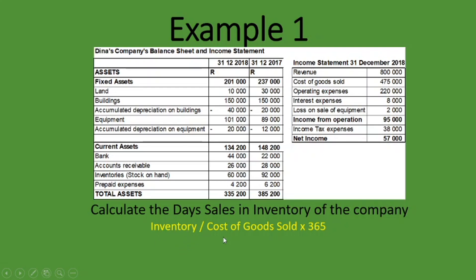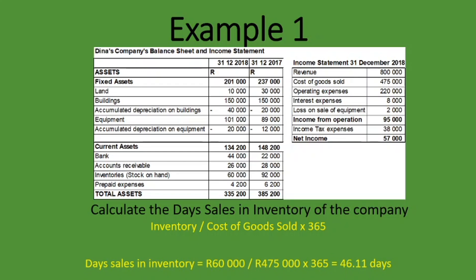So the numerator is 60,000 rand. From the income statement, cost of goods sold is 475,000 rand. Therefore: 60,000 ÷ 475,000 × 365 = 46.11 days. That means on average this company sells off its inventory in about 46 days. If using average inventory, you would take the 2017 inventory of 92,000 rand plus the 2018 inventory of 60,000 rand, divide by two, and use that as the numerator instead.